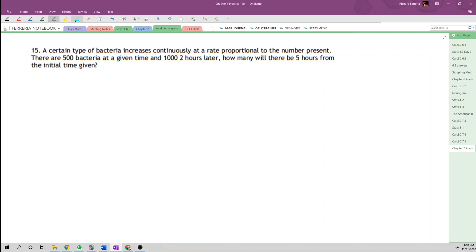This part where it says 'increases continuously at a rate proportional to the number present' tells me what the differential equation is. The differential equation, dp/dt, is going to be k times p, proportional to the amount present. As we know, that is the differential equation for exponential growth.